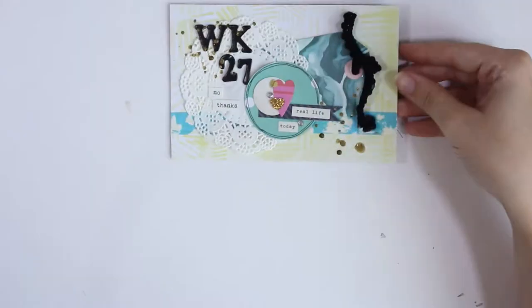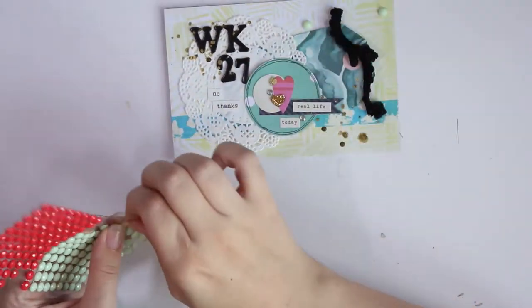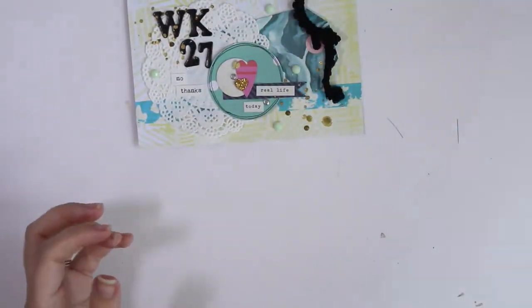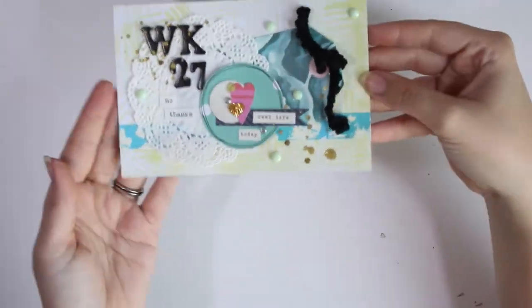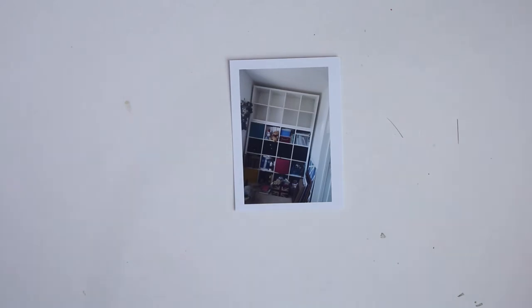I'm adding some of these enamel dots from the Pound Shop or Poundland. They're really handy - you get like thousands of them for a pound. For the amount of money and the amount that you get, really good value for cost.